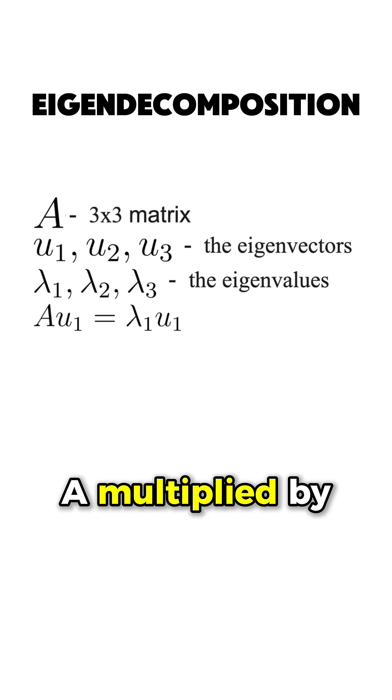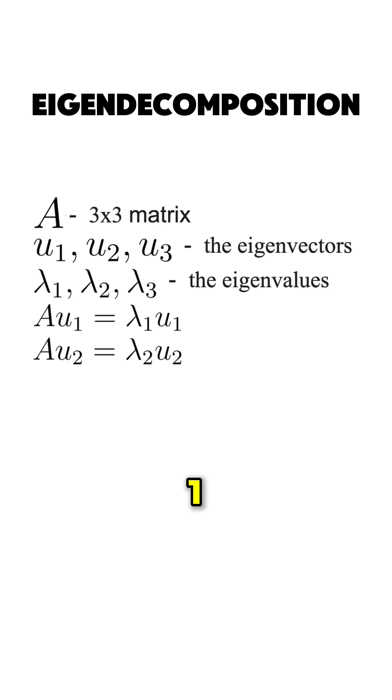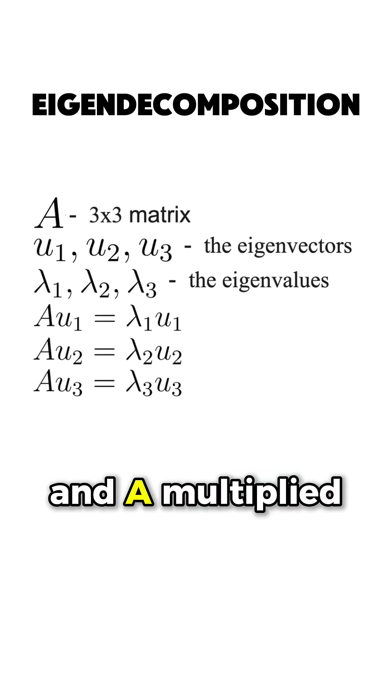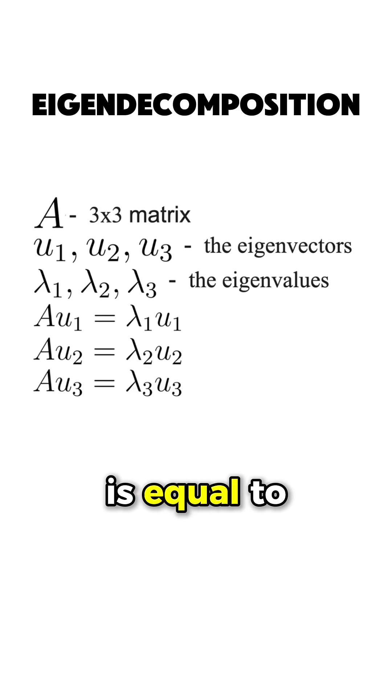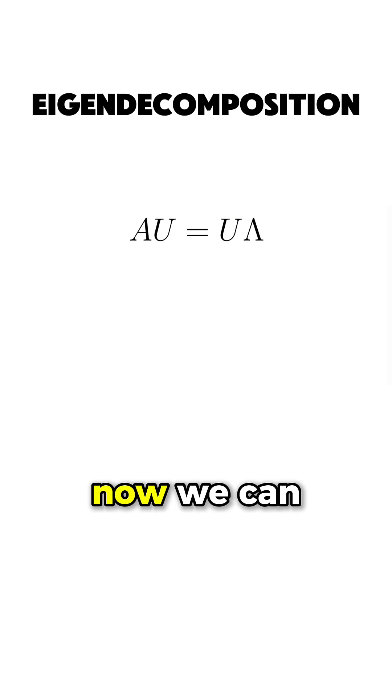We have that A multiplied by U1 is equal to lambda 1 multiplied by U1, A multiplied by U2 is equal to lambda 2 multiplied by U2, and A multiplied by U3 is equal to lambda 3 multiplied by U3.